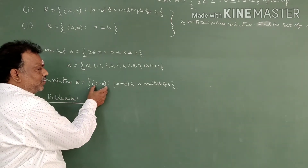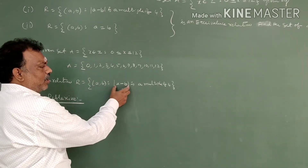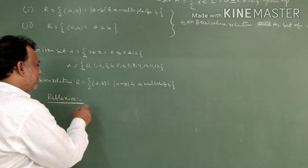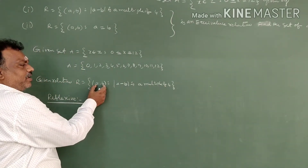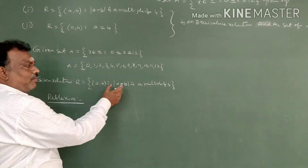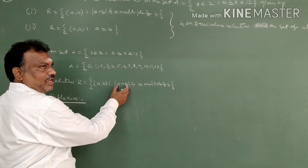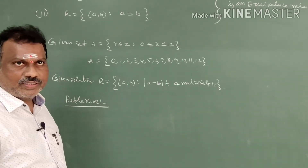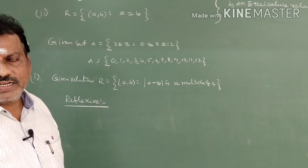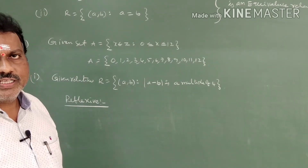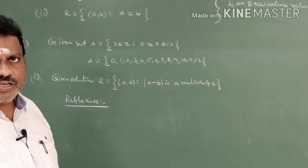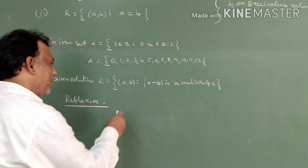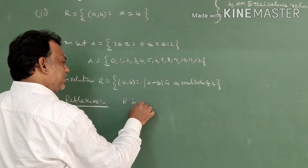For reflexive, if (a,a) belongs to R, then mod of a minus a equals zero. Zero is a multiple of 4 because 4 times zero equals zero, so zero is exactly divisible by 4. Therefore R is reflexive.